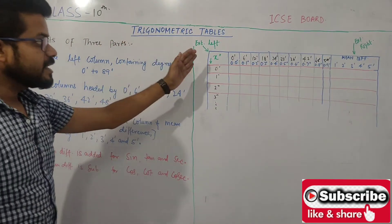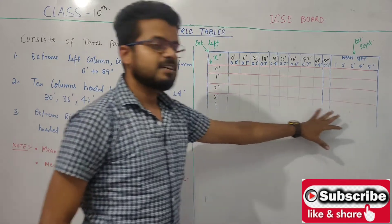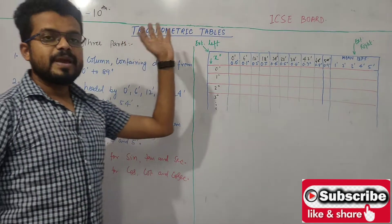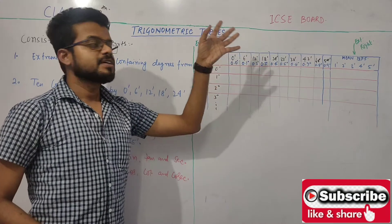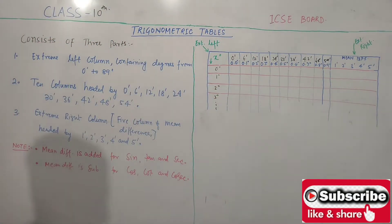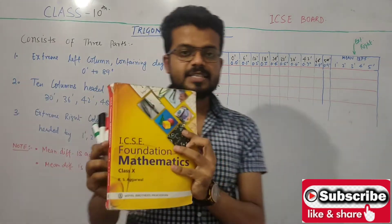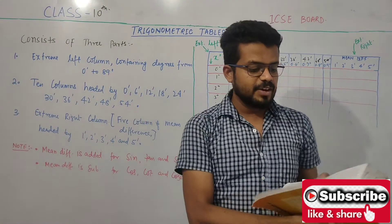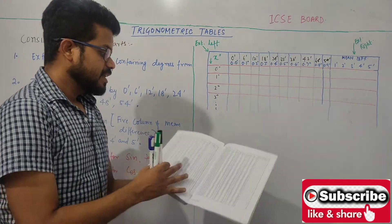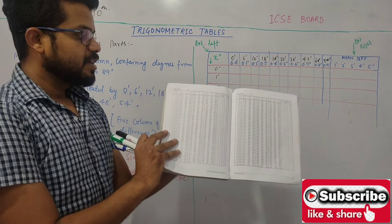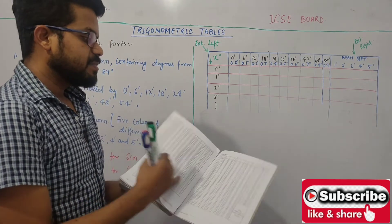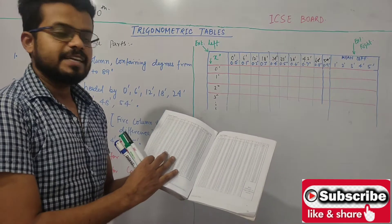In the trigonometric table, here is a table which I roughly draw. In your book, it is at the back side of the book — there is a table given. This is the ICSE Mathematics Foundation book. At the back side of your book, there is the sine table, after that the cos table, and then the tan table.